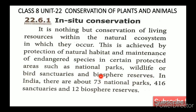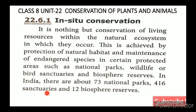In India, there are about 73 national parks, 416 sanctuaries, and 12 biosphere reserves. So for In-Situ Conservation, there are three main methods: national parks, sanctuaries, and biosphere reserves.